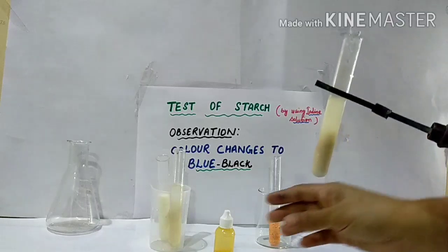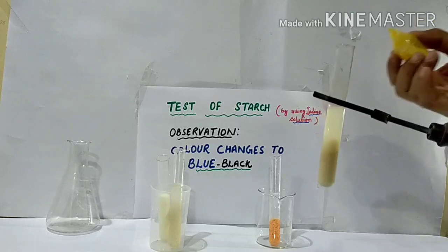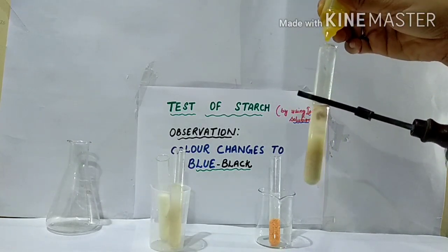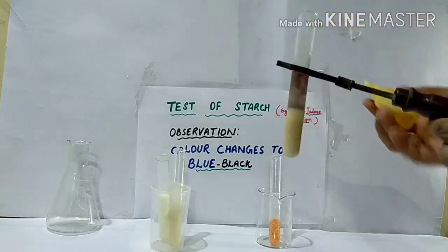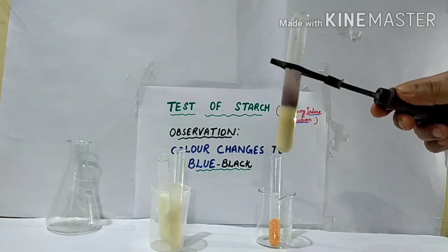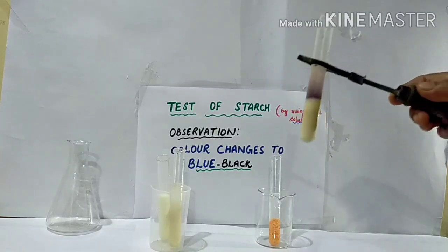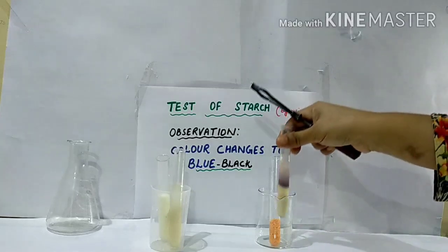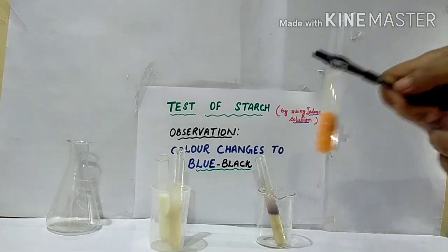I will put a few drops of iodine solution into the wheat flour and we'll see whether the color changes or not. You can see the color has changed to blue-black. This means that wheat flour contains starch.